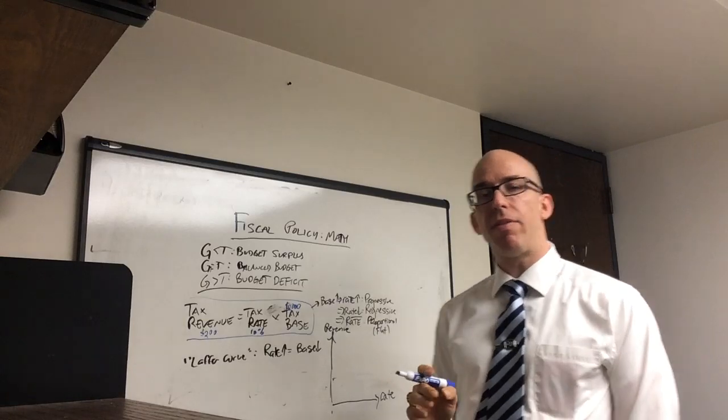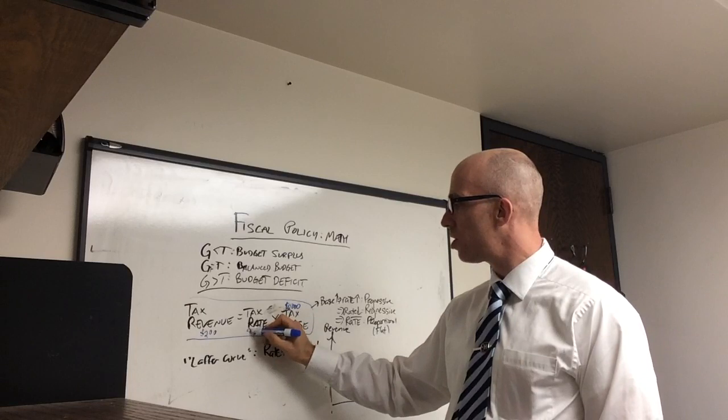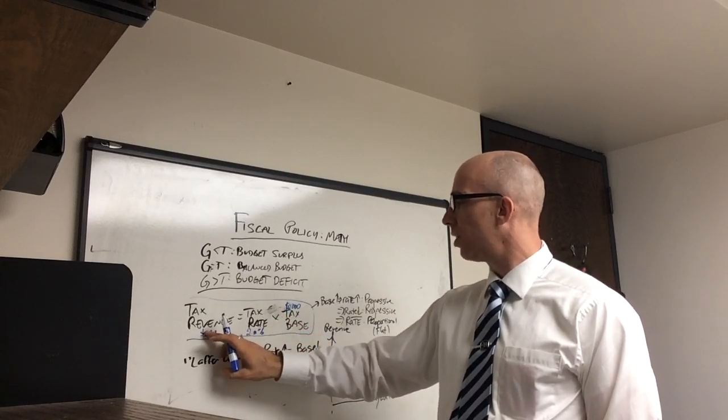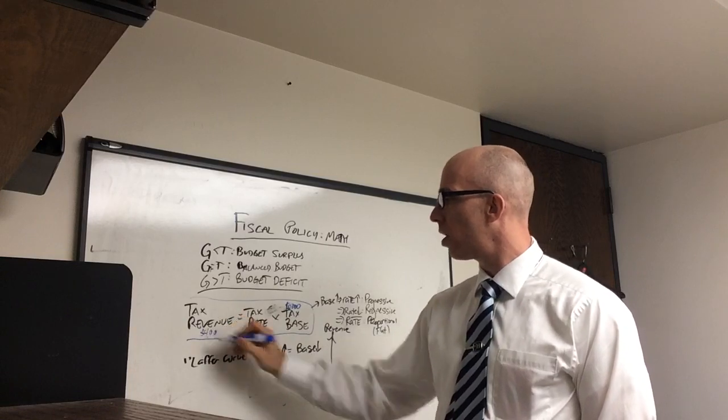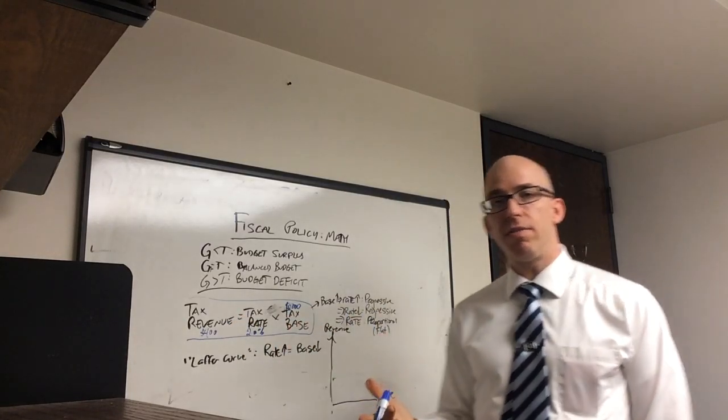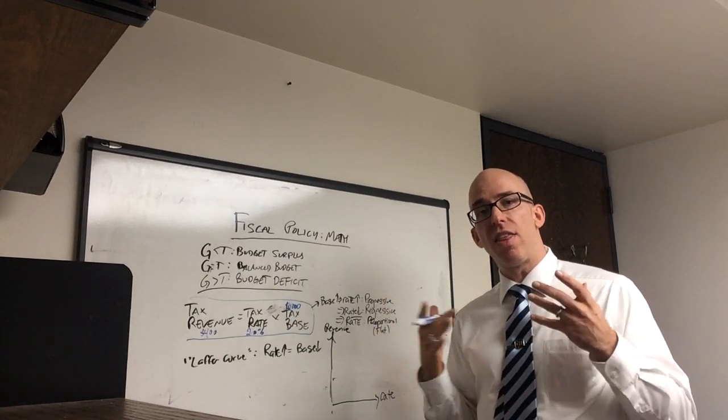But what would happen if you raised the percentage because the base went up and you changed it to 20%? Now you would have $400 or one-fifth. So in other words, changing the rate because the base got higher would be a progressive tax. So that's a change in the percentage based on the change in the base.